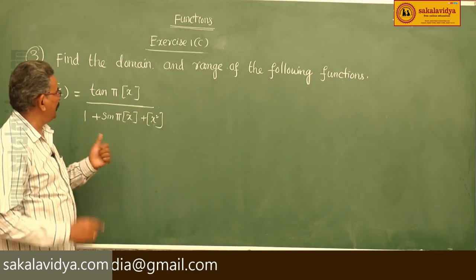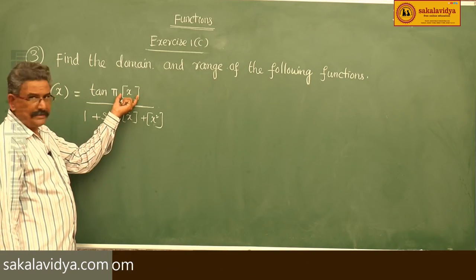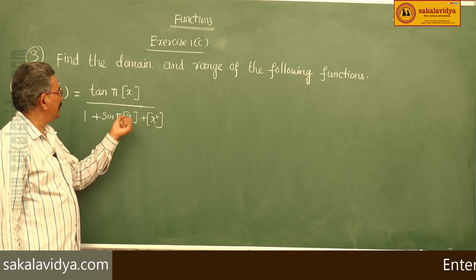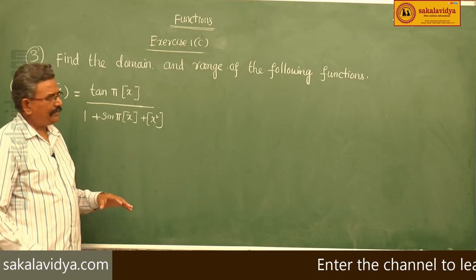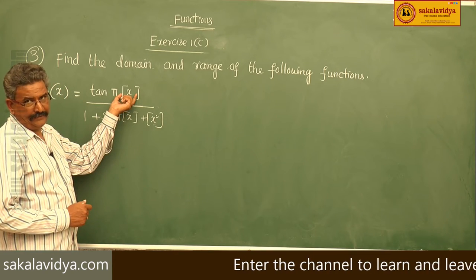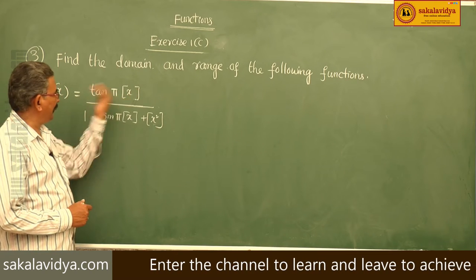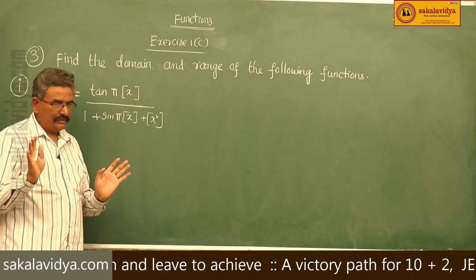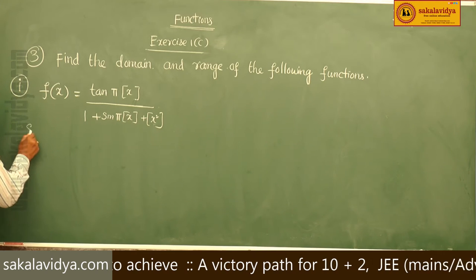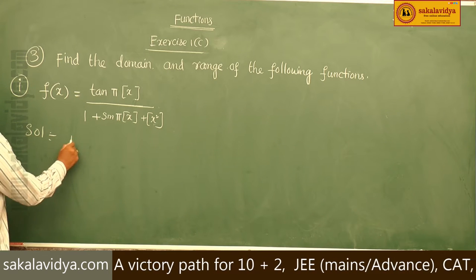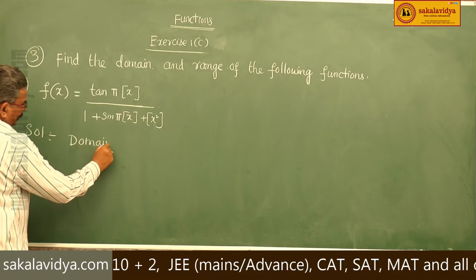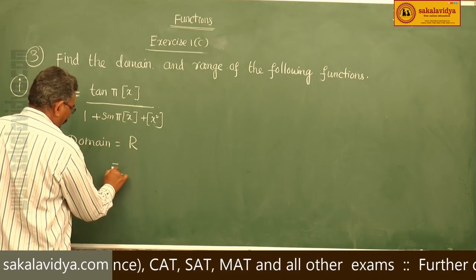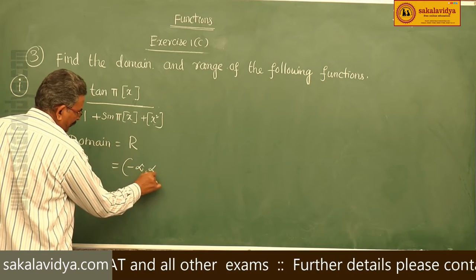Domain means: here we have bracket x, which is the floor function. If x is any real value, bracket x gives a valid value. So this function takes all real values. That is why the domain is ℝ — the set of real numbers, which is minus infinity to infinity.